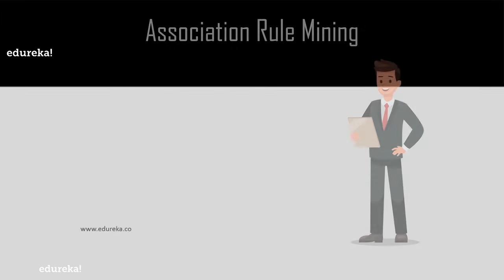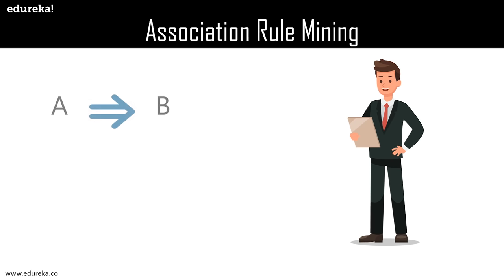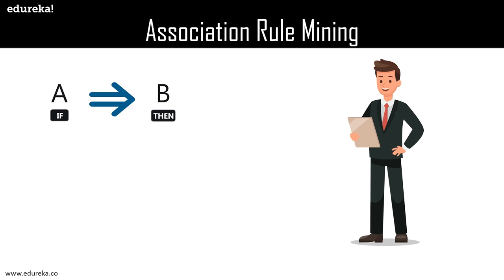Association rule mining can be thought of as an if-then relationship. For example, if item A is being bought by a customer, then the chances of item B being picked by the same customer under the same transaction ID are found out. It is not a causality, rather it is a co-occurrence pattern. There are two elements to this rule: the 'if' part, also known as the antecedent, and the 'then' part, known as the consequent. If A → B, it means if a person buys item A, they will most probably also buy item B.